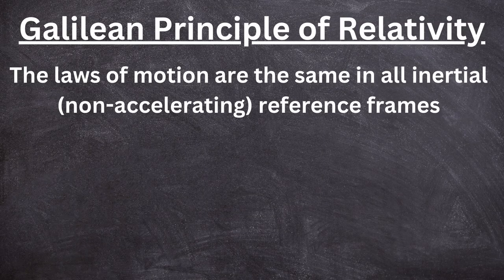Considering an object to be still is called an inertial reference frame. As an outside observer looking at a car, the Earth is the inertial reference frame because we pretend the Earth is not moving. Inside the car, the car is the inertial reference frame because we pretend the car is not moving. This brings us to the Galilean principle of relativity.